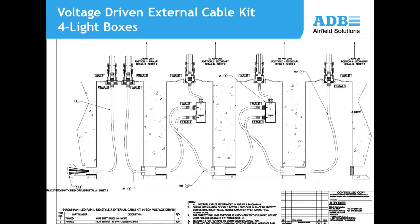To simplify installation, the system uses a set of connector boxes between the various PAPI light units, with pre-connectorized cables connecting to those boxes and then to each PAPI. This eliminates the need to field-splice wiring in each base can to deliver power and signals to each PAPI light unit.